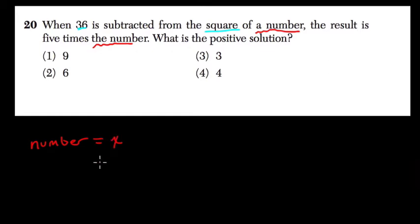You can pick any variable, but I'll pick x. And we know that 36 is subtracted from the square of this number. So the square of any number in a variable would equal x times x, which is x squared, or x to the second power.